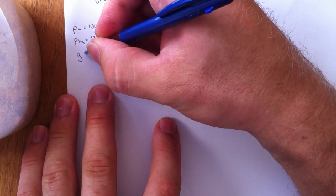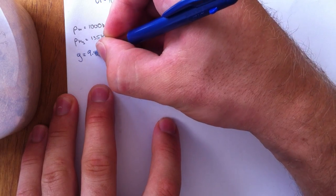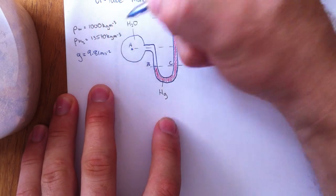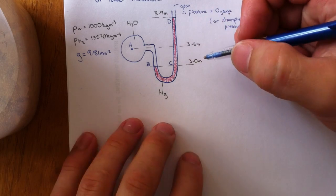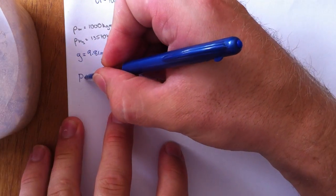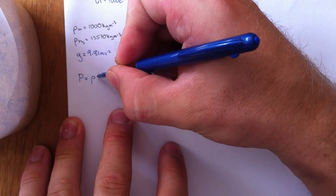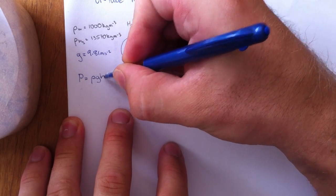Also as reference, gravitational acceleration is 9.81 meters per second squared. We're going to be using the equation pressure equals density times gravity times height.